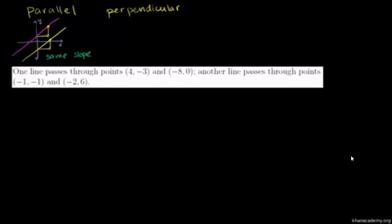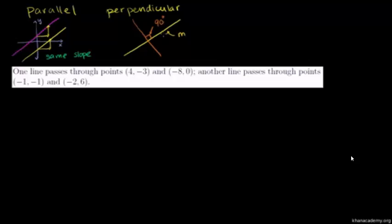Perpendicular lines are kind of the opposite. A line that is perpendicular to another will not only intersect it — it will intersect at a right angle, at a 90 degree angle. A perpendicular line's slope: if the yellow line has a slope of m, then the orange line perpendicular to it is going to have a slope of negative 1 over m. Their slopes are going to be the negative inverse of each other.